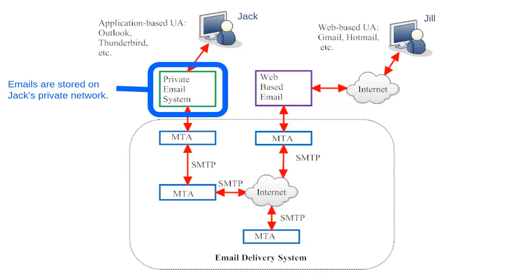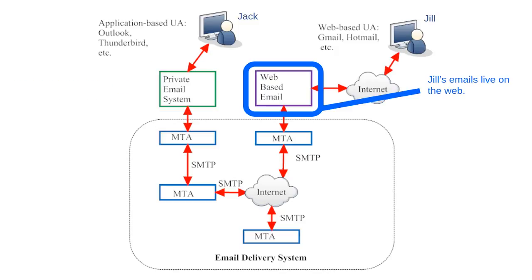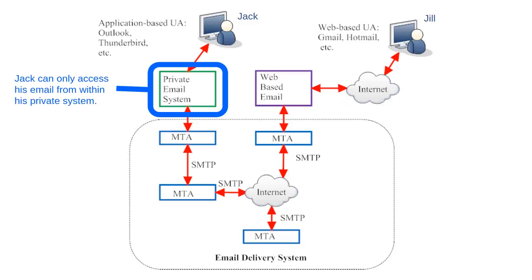A private email system also means that Jack's emails are stored on Jack's private network — in fact, he may just store them right on his computer. If we look over to the right side of the illustration, we see that Jill has a web-based user agent, which stores her emails out on the web. Jill can send and receive emails from any computer with an internet connection. Jack can only send and receive emails from within his private network, which may have only one computer connected to it.